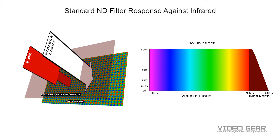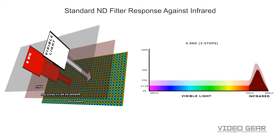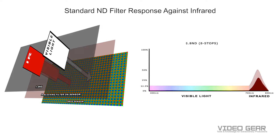Standard ND filters only decrease light in the visible spectrum. However, digital camera sensors are also sensitive to infrared light. To deal with this issue, camera vendors include a filter over the sensor that decreases infrared light so it doesn't contaminate the image. If we look at how a standard ND filter works, we'll see that the visible light is decreased with each filter strength from one stop to two stops to three stops all the way down to six stops. Because infrared light isn't decreased very much by standard ND filters, the camera's infrared blocking filter can be overpowered, leading to what is called IR pollution.